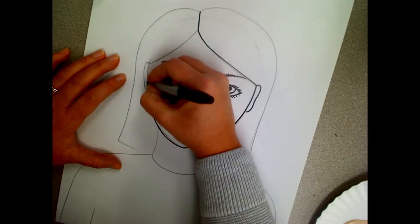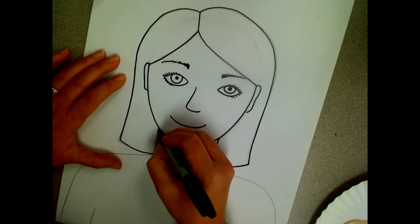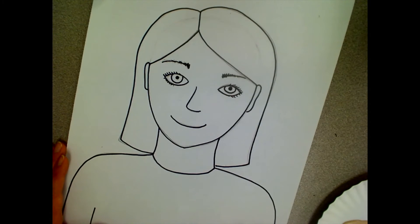Trace everything that you drew in pencil with your Sharpie. When you're done tracing with Sharpie, take a big eraser or the eraser at the end of your pencil and erase any lines that you may have accidentally missed.